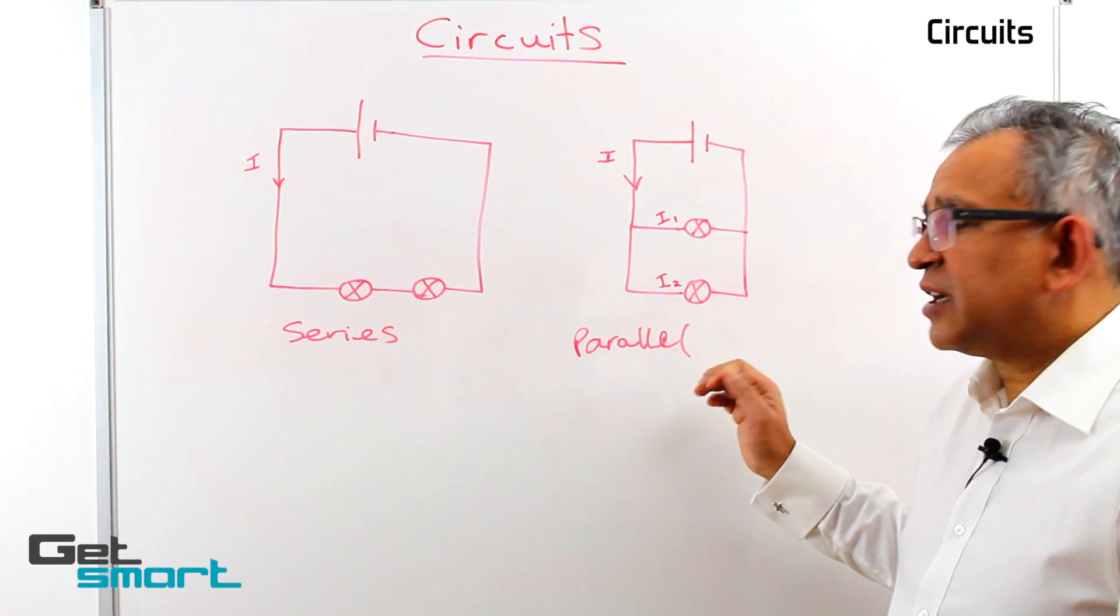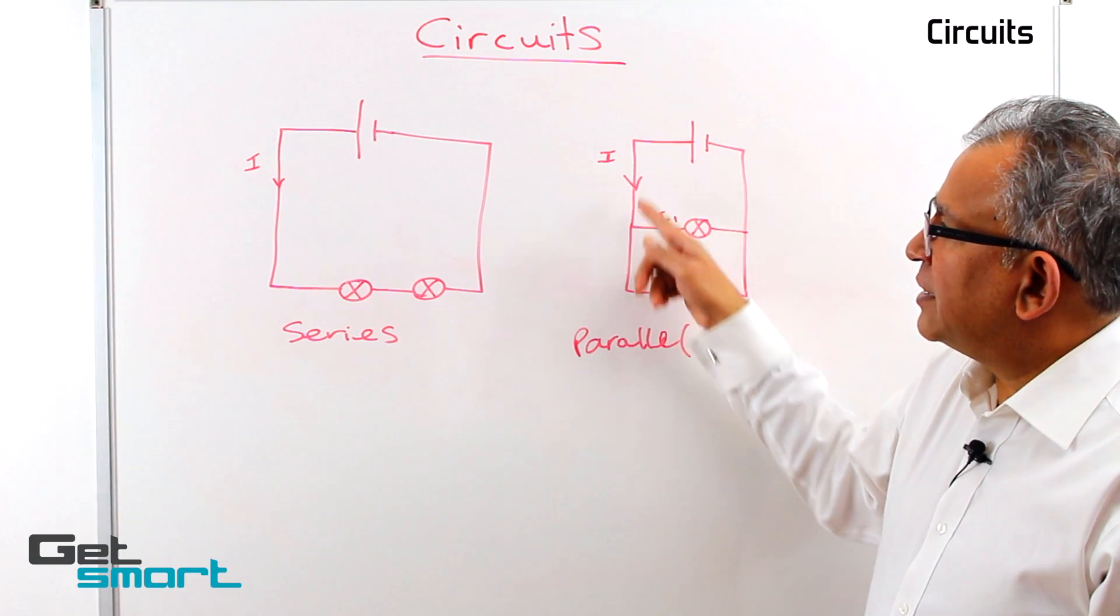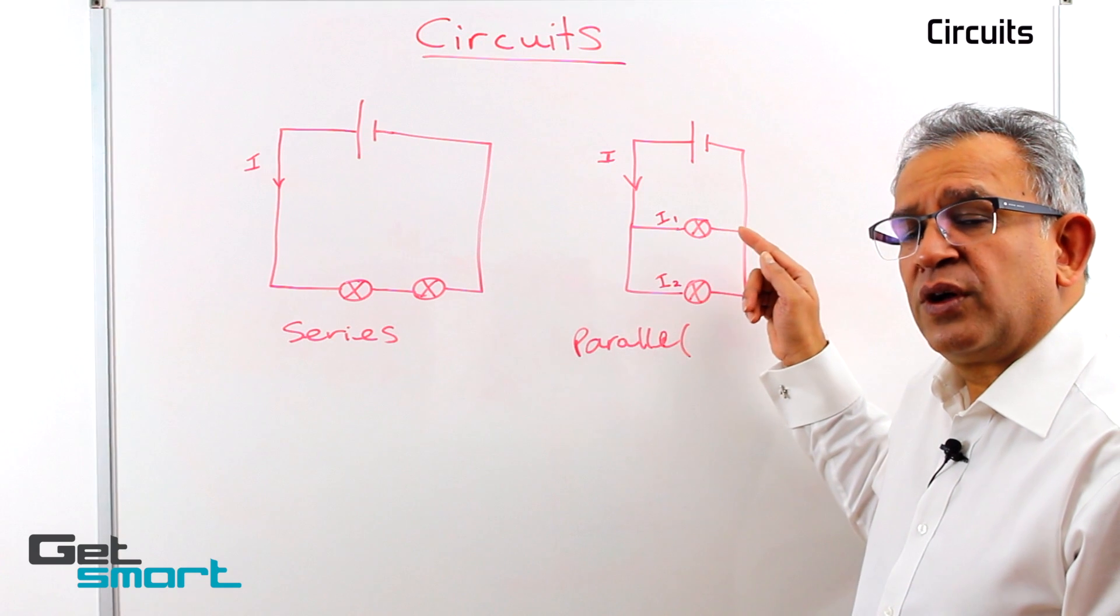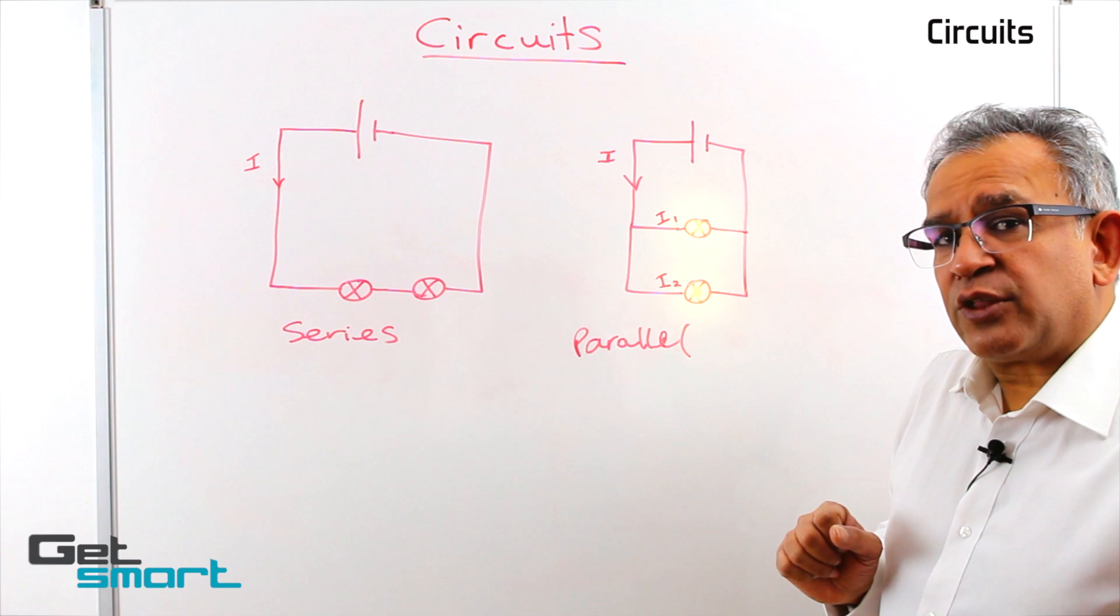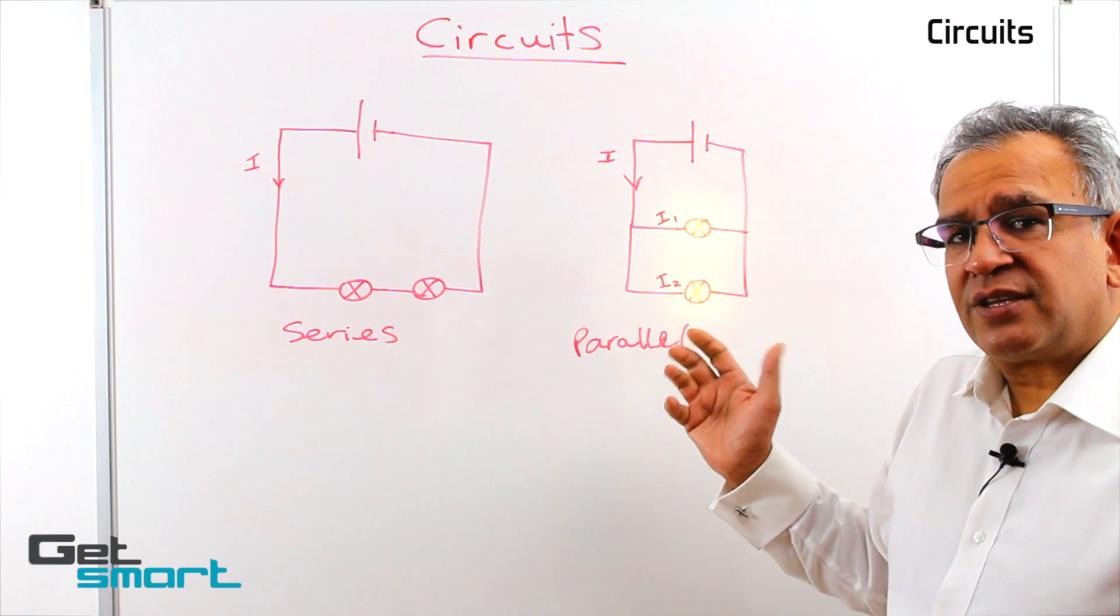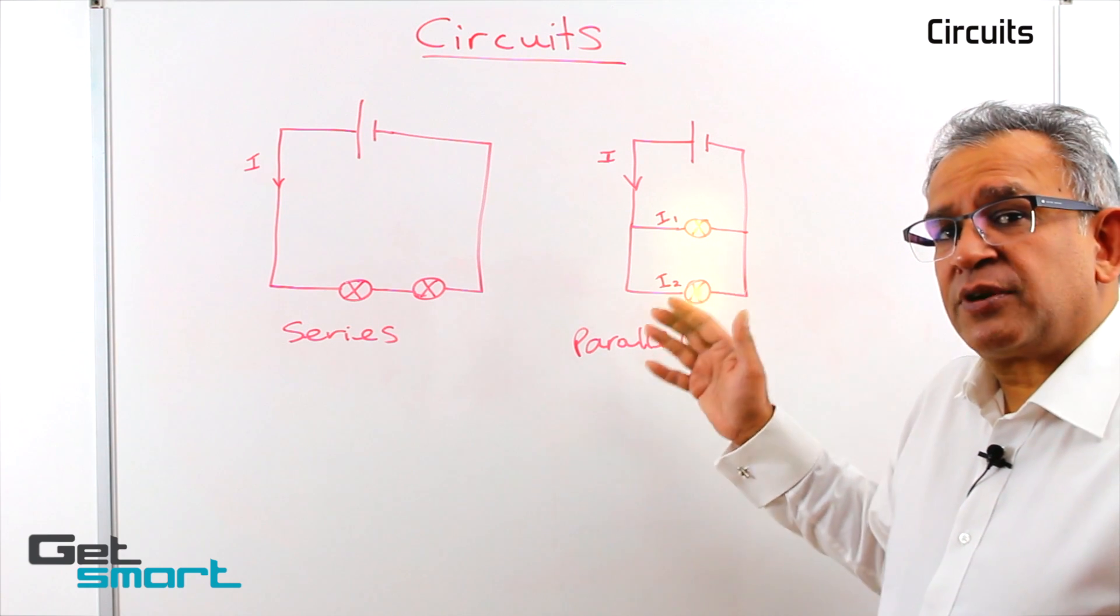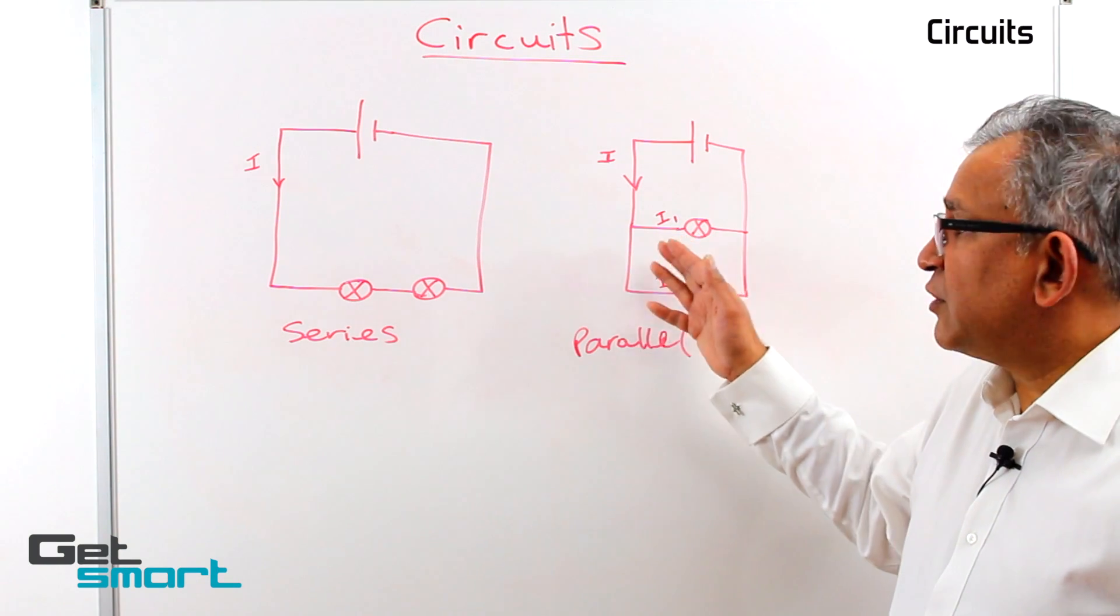In the parallel circuit, the energy supplied gets split, so therefore the bulbs both have to split the current. In other words, the flow of energy is less and therefore there will be a separate and a different amount of energy transferred to both the bulbs.